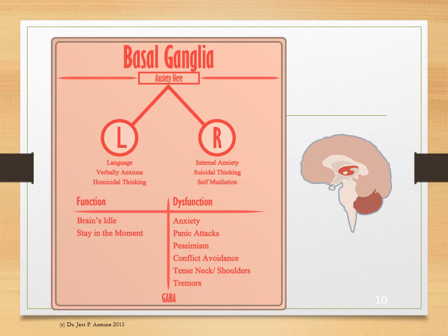The basal ganglia — anxiety lives in the basal ganglia. Left-sided and right-sided dysfunction have different expressions. Left-sided, you might have language problems and verbal anxiety. Right-sided dysfunction will cause internal anxiety, maybe suicidal thinking or self-mutilation. This is your brain's idle — this is how you stay in the moment. Dysfunctionally: anxiety, panic attacks, pessimism, conflict avoidance, very tense necks or shoulders, and tremors. GABA is the main neurotransmitter of this area.